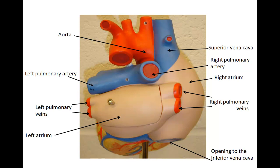Now let's take a posterior view, or backside view, of the heart. Here is the aorta, as well as the superior vena cava. The left and right pulmonary arteries are branches off of the pulmonary trunk and will transport deoxygenated blood to the lungs. The left and right pulmonary veins transport oxygenated blood back to the heart, and the left atrium receives this blood.